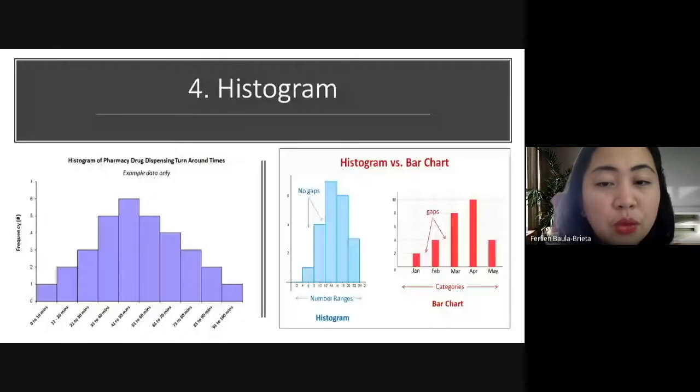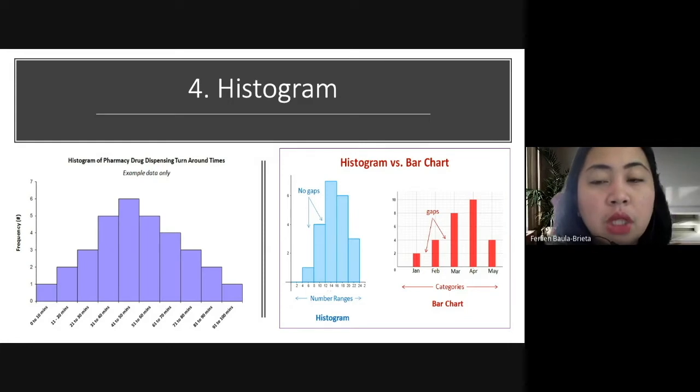Now moving forward to the next one is a histogram. So a frequency distribution shows how often each different value in a set of data occurs. A histogram is the most commonly used graph to show frequency distribution. It looks like very much of a bar graph, as you can see here.